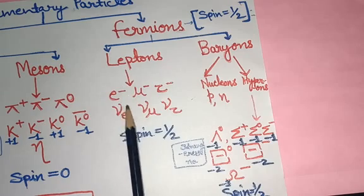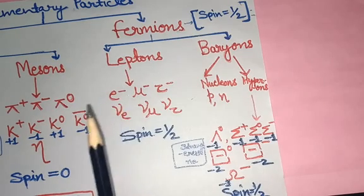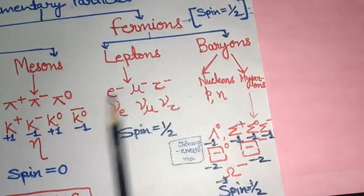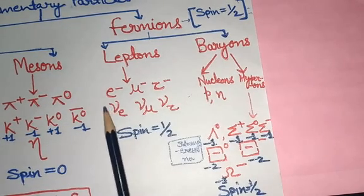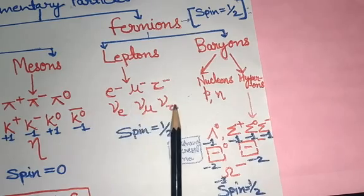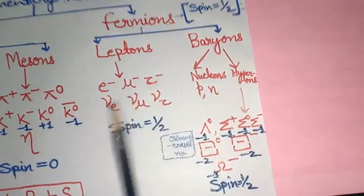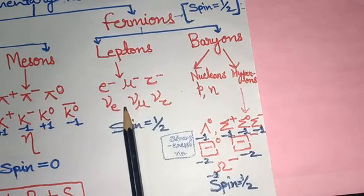Leptons come from the fermion category. The lepton particles you must remember are: electron, muon, tau, electron neutrino, mu neutrino, and tau neutrino. After these particles come their corresponding antiparticles.